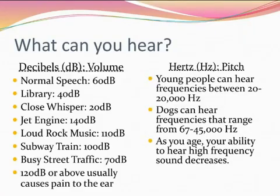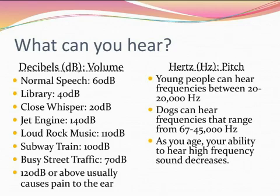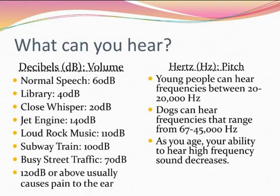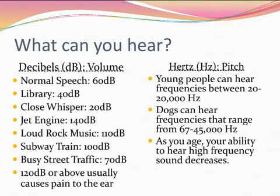What can we hear? Common decibel levels: normal speech is 60 decibels, a library is 40 decibels, a close whisper is 20 decibels, a jet engine is 140 decibels, loud rock music is 110 decibels, a subway train is 100 decibels, and busy street traffic is 70 decibels.